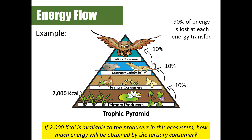Here's an example of how you might see it on a quiz, test, or worksheet. If 2,000 kilocalories is available to the producers in this ecosystem, how much energy will be obtained by the tertiary consumer? Starting with 2,000 kilocalories at the producer level: primary consumers get 10 percent of 2,000, which is 200 kilocalories. Secondary consumers get 10 percent of that — 20 kilocalories. Tertiary consumers get 10 percent of 20, which gives us 2 kilocalories.